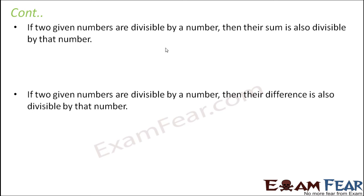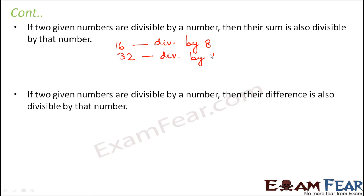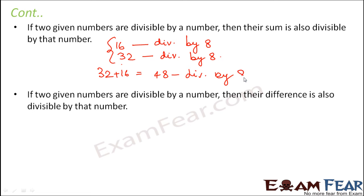Next rule: if two given numbers are divisible by a number, then their sum is also divisible by that number. For example, 16 is divisible by 8 and 32 is also divisible by 8. As per this rule, the sum of 32 and 16, which is 48, will also be divisible by 8. These are some very interesting rules of divisibility that help you quickly decide whether a number is divisible by another.